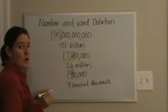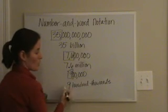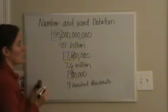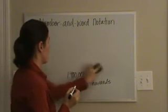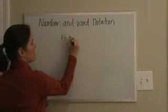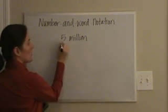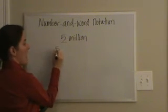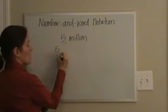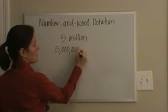Now the same holds true if they give us the number and word notation and we have to go back to standard form. If they give us five million, our only important number is the five and we fill in enough zeros to make it million — so it would be six zeros.